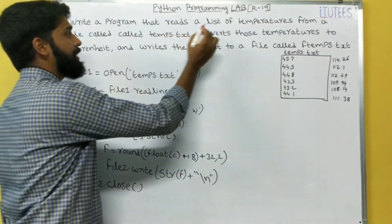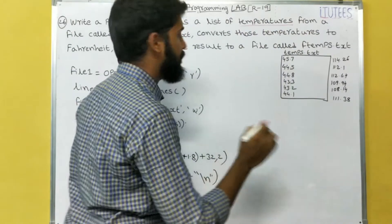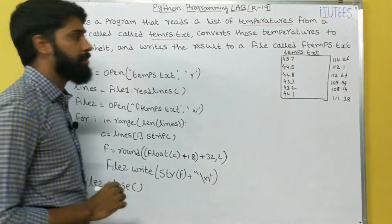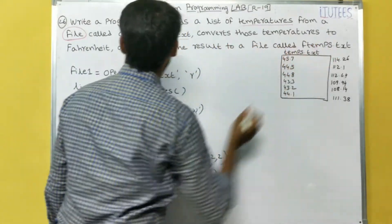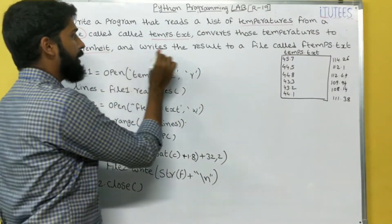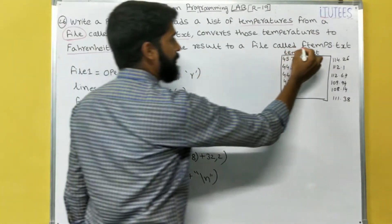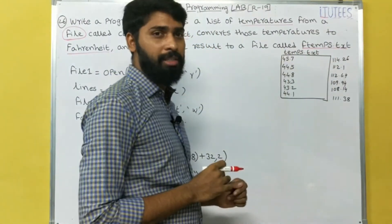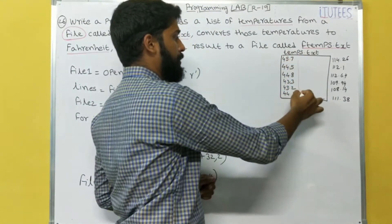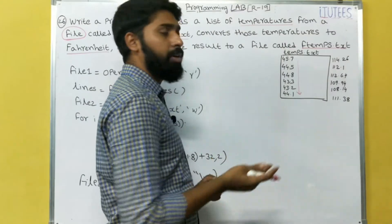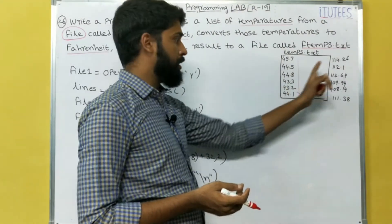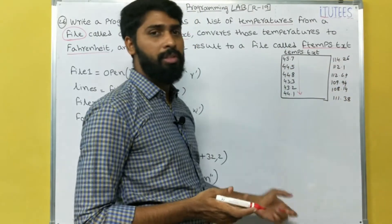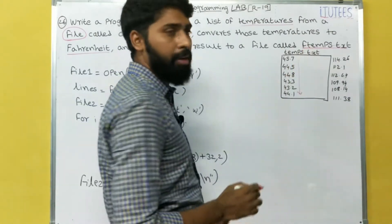Write a program that reads a list of temperatures from a file called temps.txt, converts those temperatures to Fahrenheit, and writes the result to a file called ftemps.txt. There is a file called temps.txt, and in this file there are a set of temperatures in Celsius. We are going to convert these temperatures into Fahrenheit and store the equivalent values in another file called ftemps.txt.